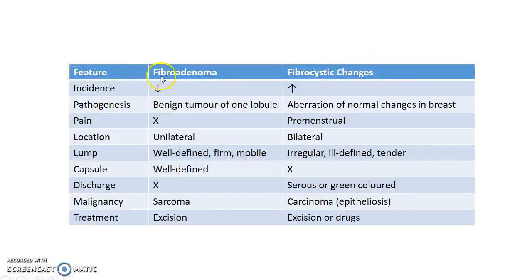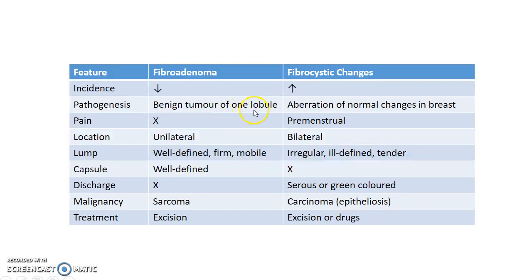Now let us see about the differences between fibroadenoma and fibrocystic breast changes. Coming to incidence, the incidence of fibroadenoma is very low compared to fibrocystic breast changes — around 70 percent of women have fibrocystic breast changes at some point in their lifetime. Fibroadenoma is a benign tumor of one lobule whereas fibrocystic breast changes are aberrations of normal changes in the breast.